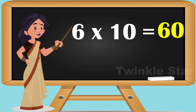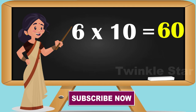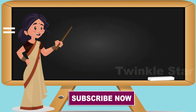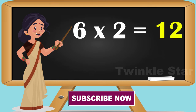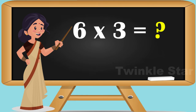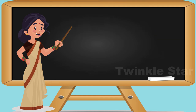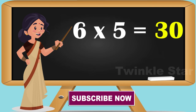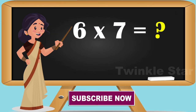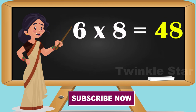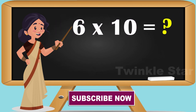Six tens are 60. 6-1 is 6, 6-2 is 12, 6-3 is 18, 6-4 is 24, 6-5 is 30, 6-6 is 36, 6-7 is 42, 6-8 is 48, 6-9 is 54, 6-10 is 60.